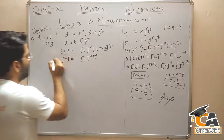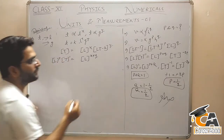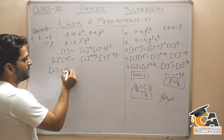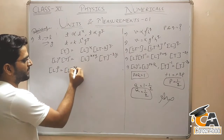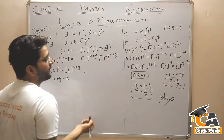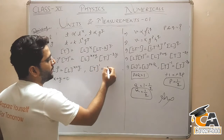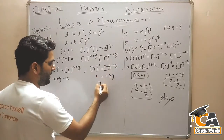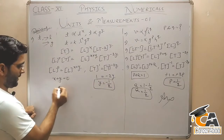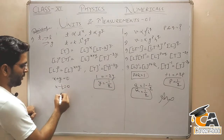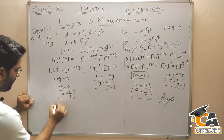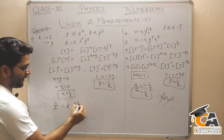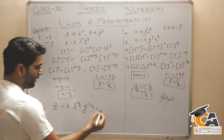T to the power 1 है, L to the power 0 लेते हैं equate करने के लिए। तो T to the power minus 2Y हो जाएगा। L to the power 0 = L to the power X plus Y — एक relation मिल जाएगा: X plus Y is equal to 0. Next, T to the power 1 = T to the power minus 2Y. So 1 is equal to minus 2Y, Y is equal to minus 1 by 2.